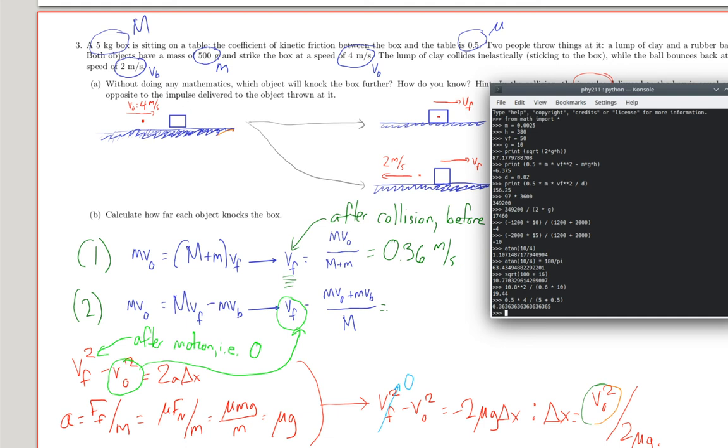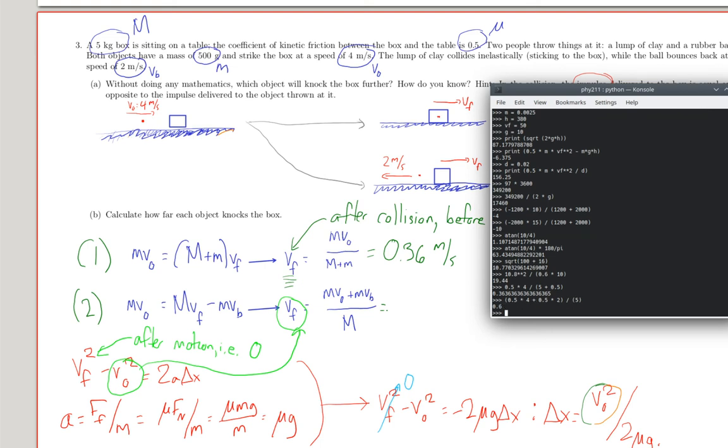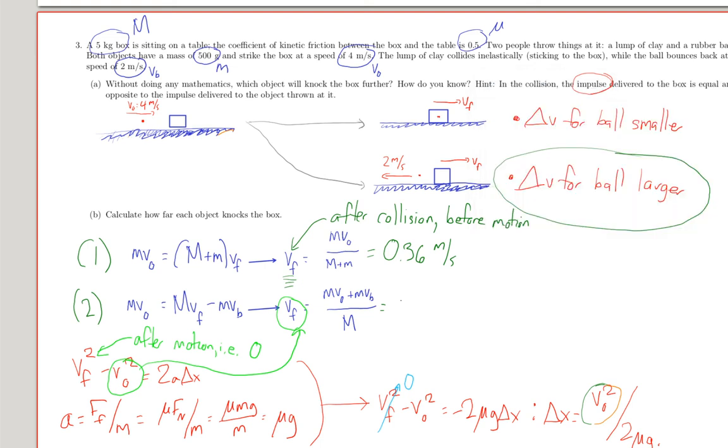And this bottom one, I've got the mass of this times v-naught plus that times v-bounce. So, that whole thing in parentheses, divided by the mass of the big object, gives me 0.6 meters per second. So, this is what we expected. The second case, where the ball bounces off, makes it go faster after the bounce.